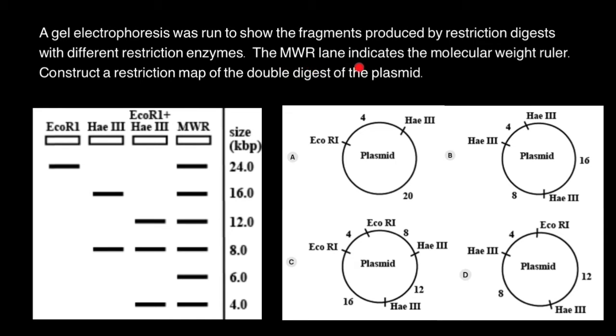The MWR lane indicates the molecular weight ruler. Construct the restriction map of the double digest of the plasmid. Take a look.